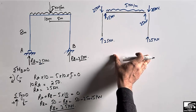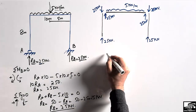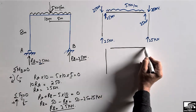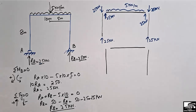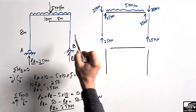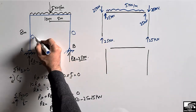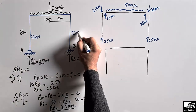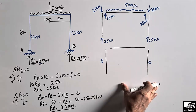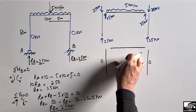Now from the free body diagram we draw the reference line for the shear force diagram. There is no load on the columns — zero kilonewton — and no transverse load, so the shear force diagram will be zero for both columns. Shear force only exists for the beam, which carries the transverse distributed load.